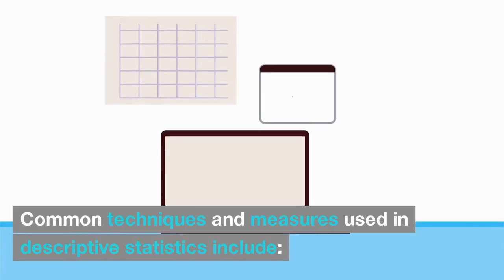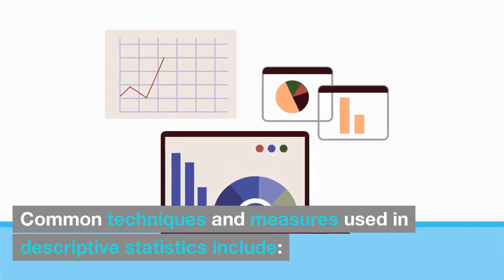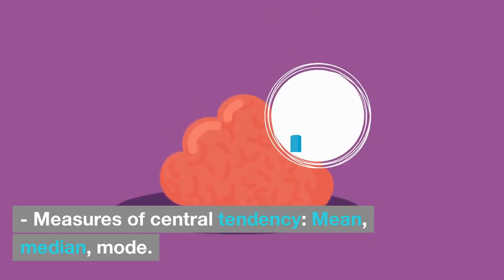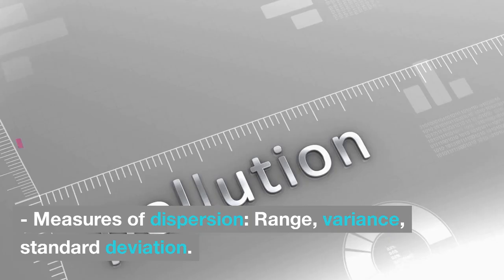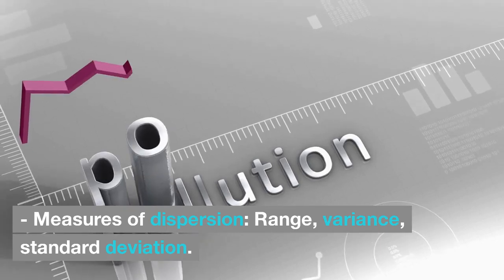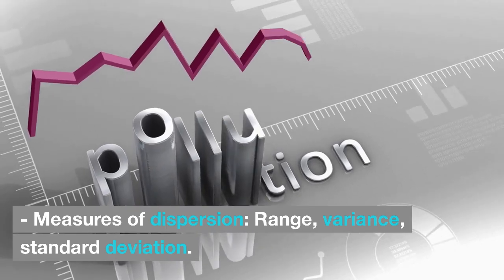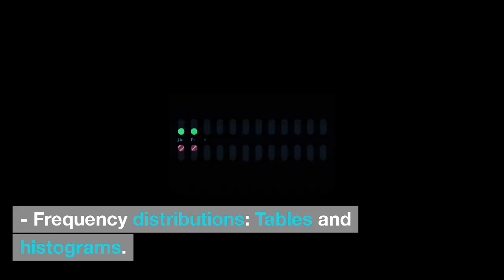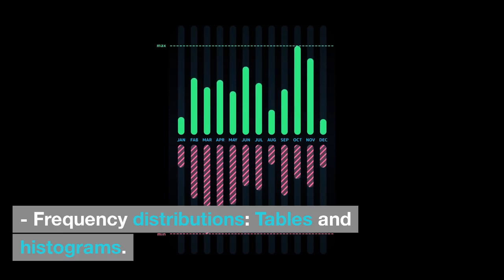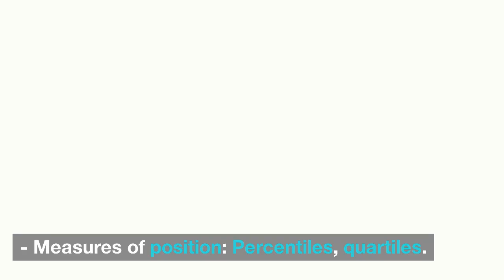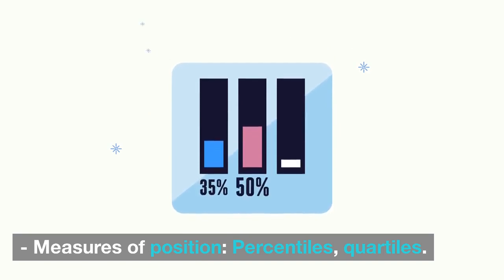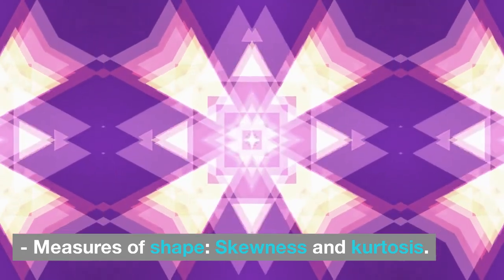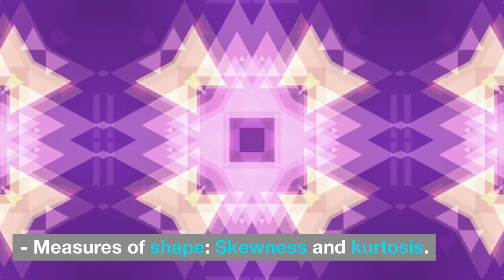Common techniques and measures used in descriptive statistics include: measures of central tendency — mean, median, mode; measures of dispersion — range, variance, standard deviation; frequency distributions — tables and histograms; measures of position — percentiles, quartiles; and measures of shape — skewness and kurtosis.